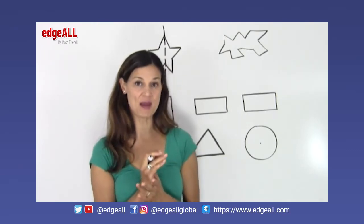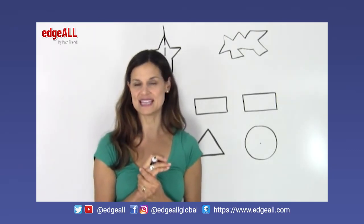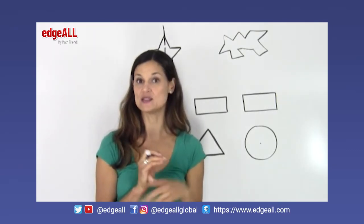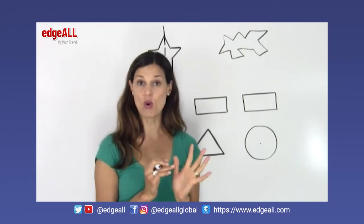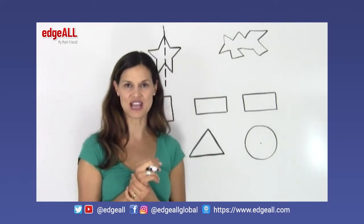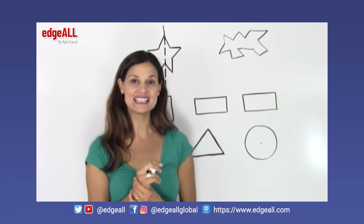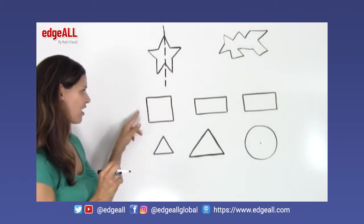Now some shapes have more than one line of symmetry, and we still call these symmetrical shapes, because remember that a symmetrical shape has to have at least one line of symmetry. But if it has more, it's also a symmetrical shape. Let's take a look at a square.